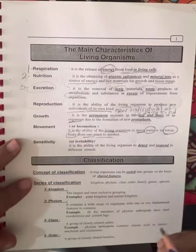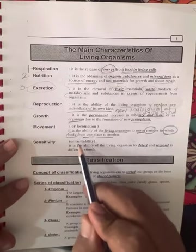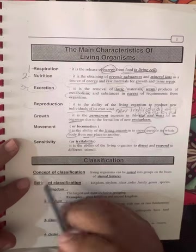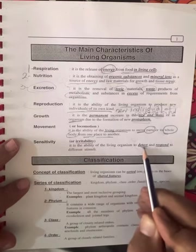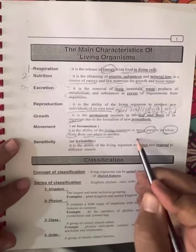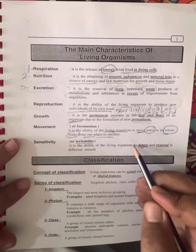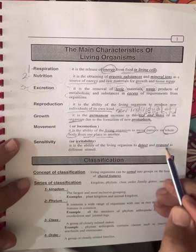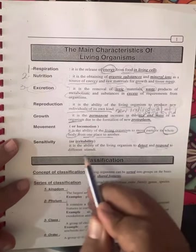Sensitivity or irritability: it's the ability of living organisms to detect, have sense, or detect or feel, and respond to different stimuli.